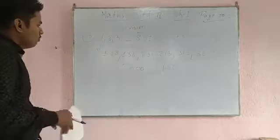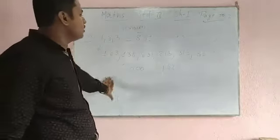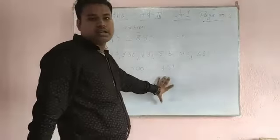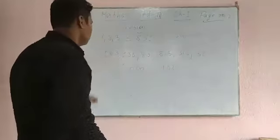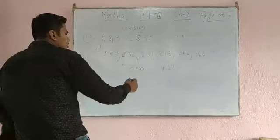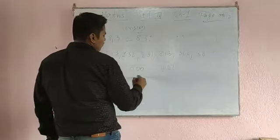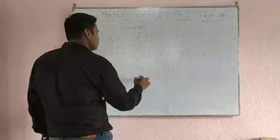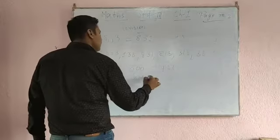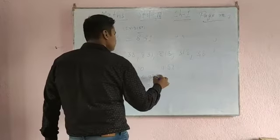Everyone knows counting. 1000 is greater or 900 is greater — very easy. 1000 is greater. So just write 1000 is greater.